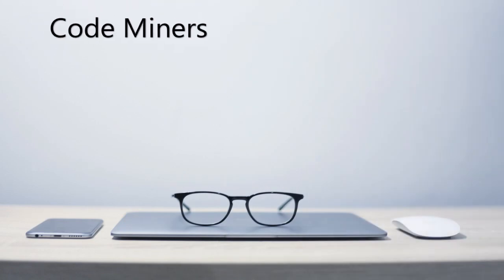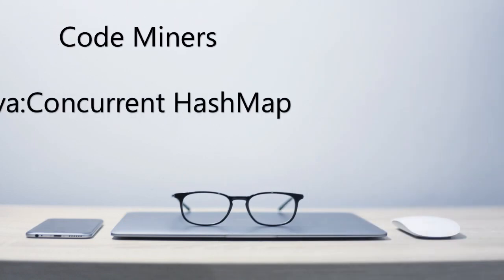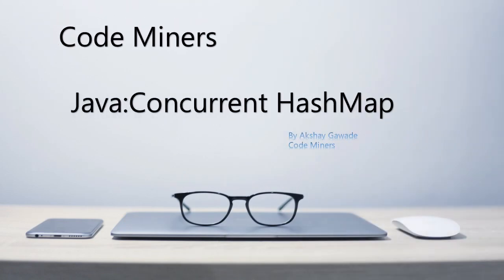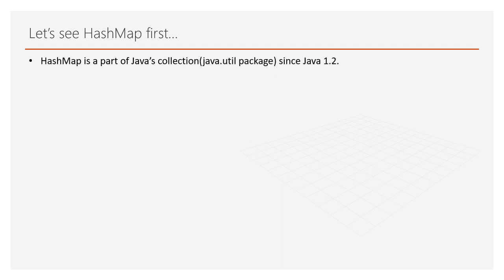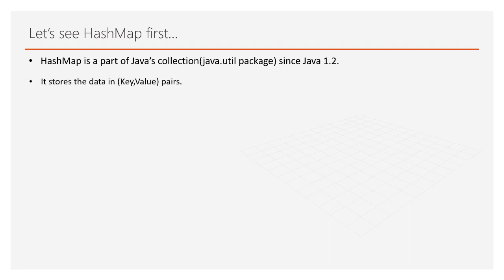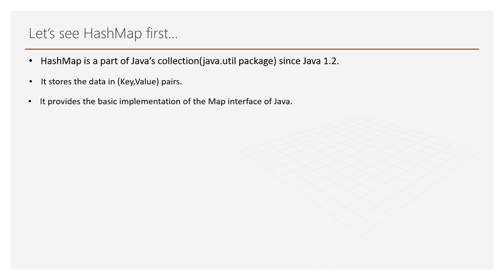Hey, welcome to Code Miners. Today we are going to see Java ConcurrentHashMap. Let's see HashMap first. HashMap is a part of Java's collection, that is the java.util package, since Java 1.2. It stores the data in key-value pairs and provides the basic implementation of the Map interface of Java.